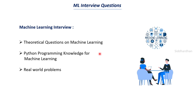The third and final aspect will be real-world problems. They might give you some dataset and ask you to do some predictions on it, or ask you to do some analysis based on some machine learning models. So these are the three aspects you should be clear on before going to an interview.